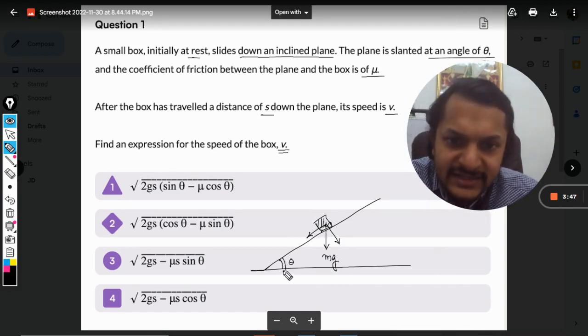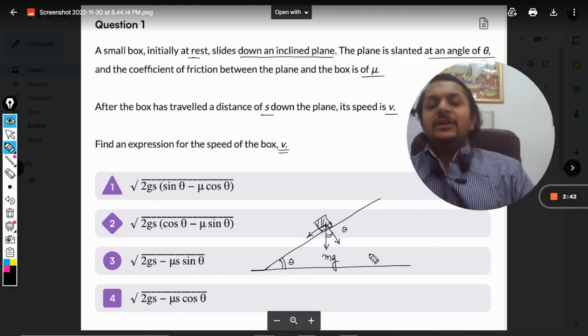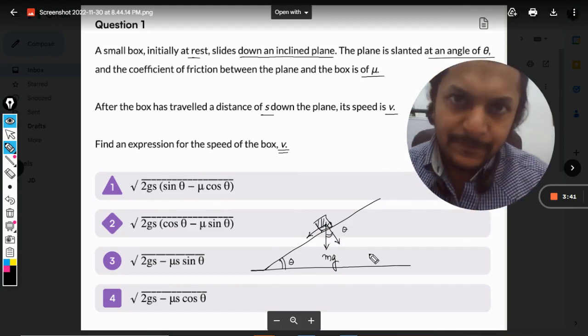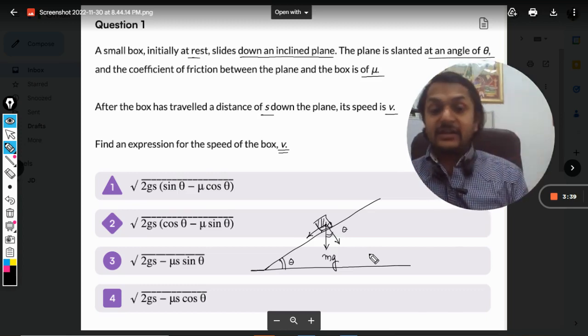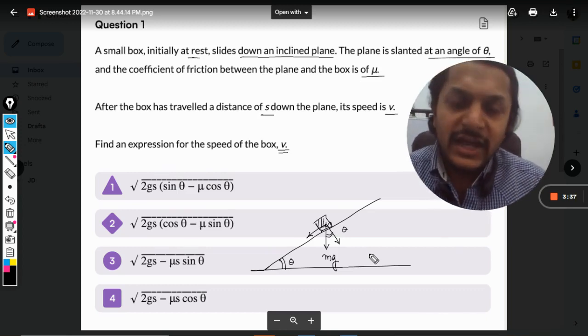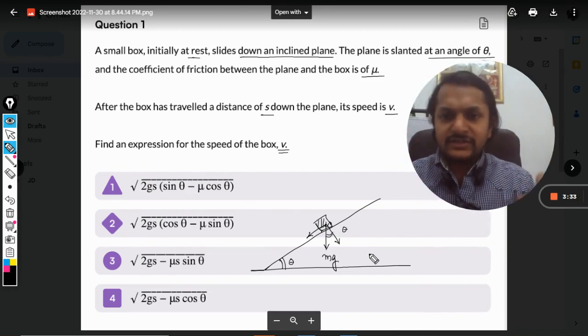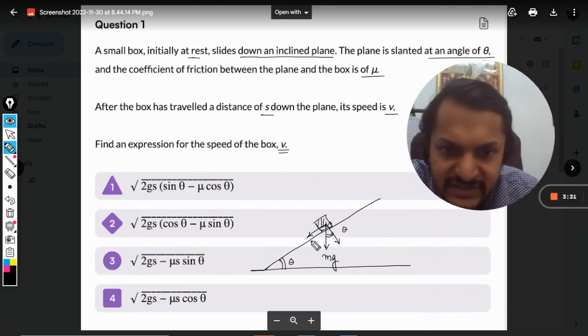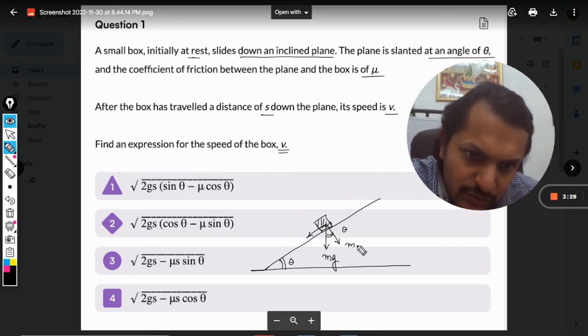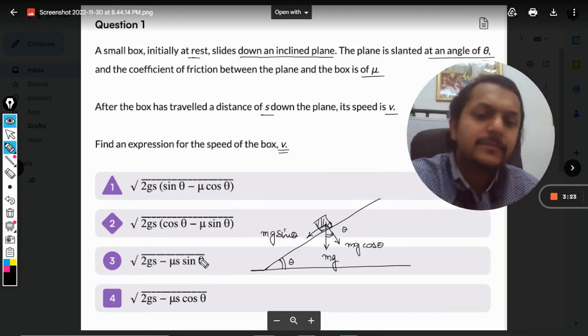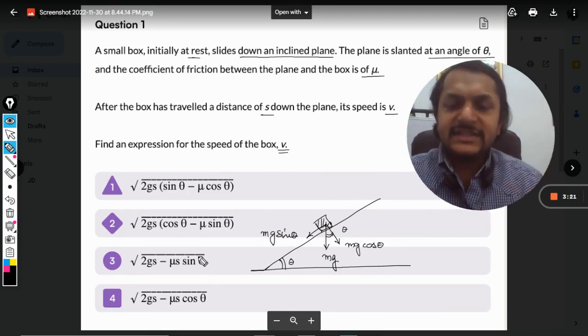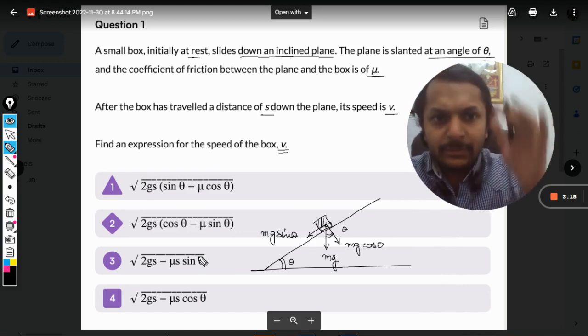weight, mg. We know that this weight will be divided into two components, like this and like this. This angle theta comes out to be equal to this angle theta. So this becomes mg cos theta and this becomes mg sin theta. First of all, this is the distribution of the weight on the body.